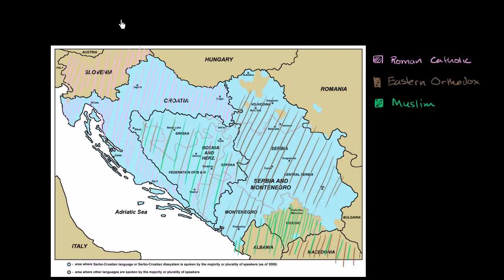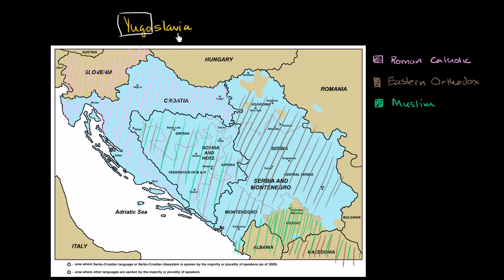First of all, it's a good idea to understand where the word Yugoslavia comes from. It's literally referring to the southern Slavic states. So 'Yugo' is referring to southern, and 'Slavia' refers to the Slavic states.